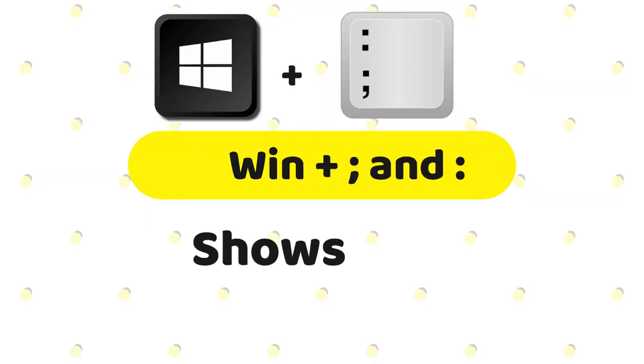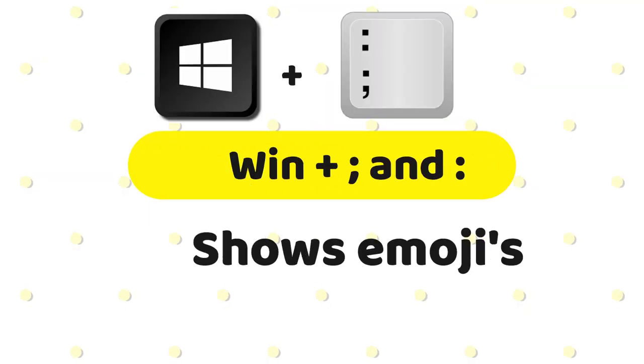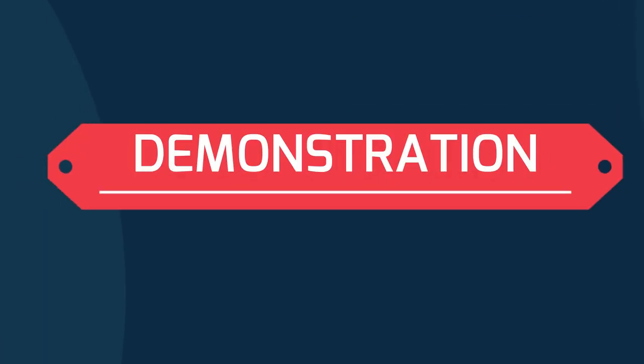Windows key plus colon and semicolon — shows emojis. This combination gives you access to emojis and lets you use them where applicable.